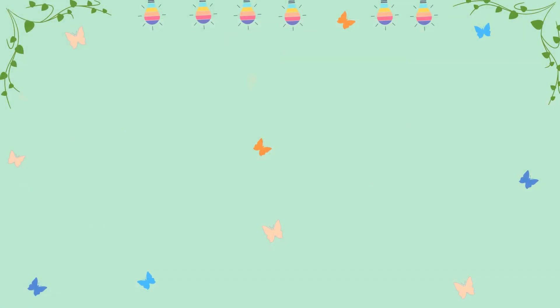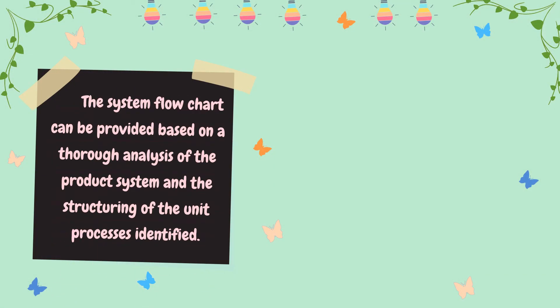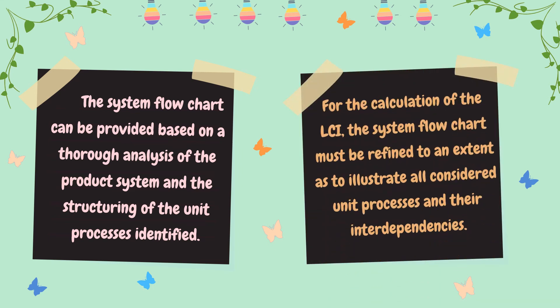The system flowchart can be provided based on a thorough analysis of the product system and the structuring of the unit processes identified. For the calculation of the life cycle inventory (LCI), the system flowchart must be refined to illustrate all considered unit processes and their interdependencies.